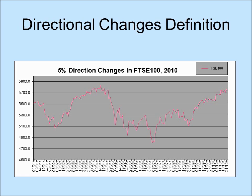A directional change is defined by a threshold that the observer cares about — for example, 5%. Suppose we want to summarize the series shown here with 5% directional changes. We look for extreme points from which price dropped or rose by 5% or more.